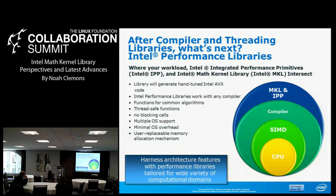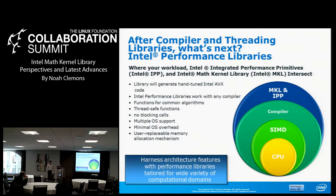With both of our performance libraries, they not only generate hand-tuned Intel AVX and forthcoming AVX2 code with Haswell, but they also generate all previous generations of SIMD code. You use these canned functions that house very deep implementations tailored for each processor as they come out. We're not doing any auto-generation of SIMD code or threading — we're actually hand-tuning for every processor that comes out. These libraries work with any compiler, so you don't have to use the Intel compiler. These are functions for common algorithms, and they're thread-safe.